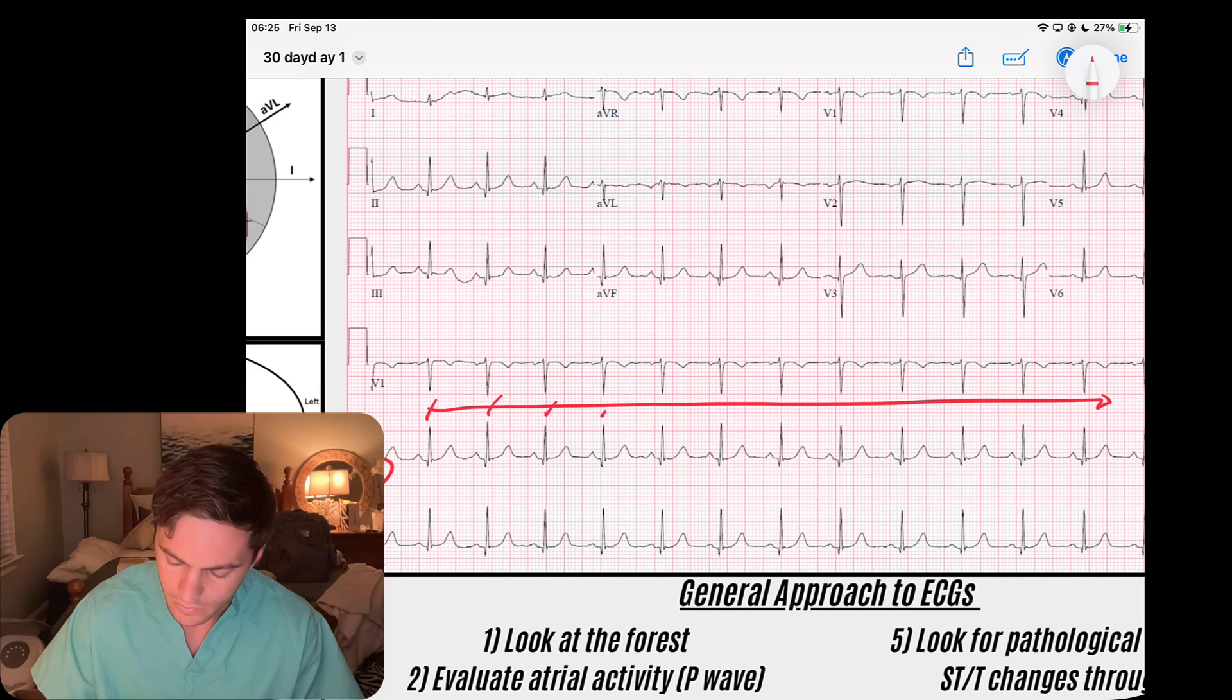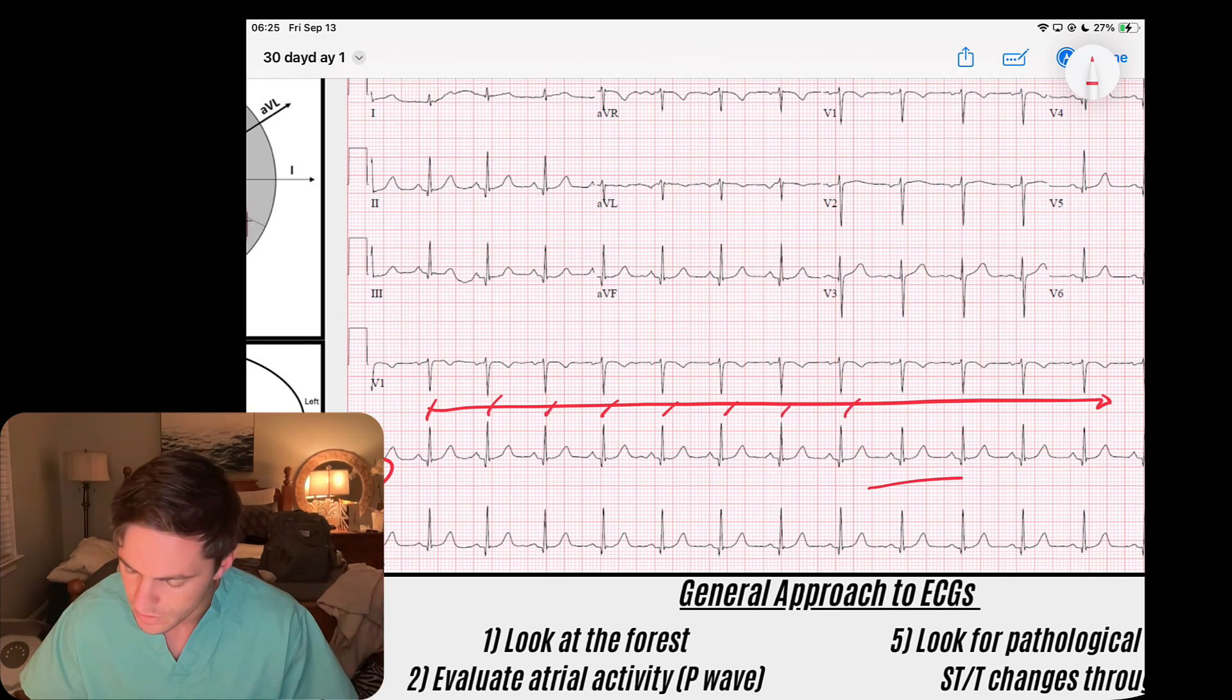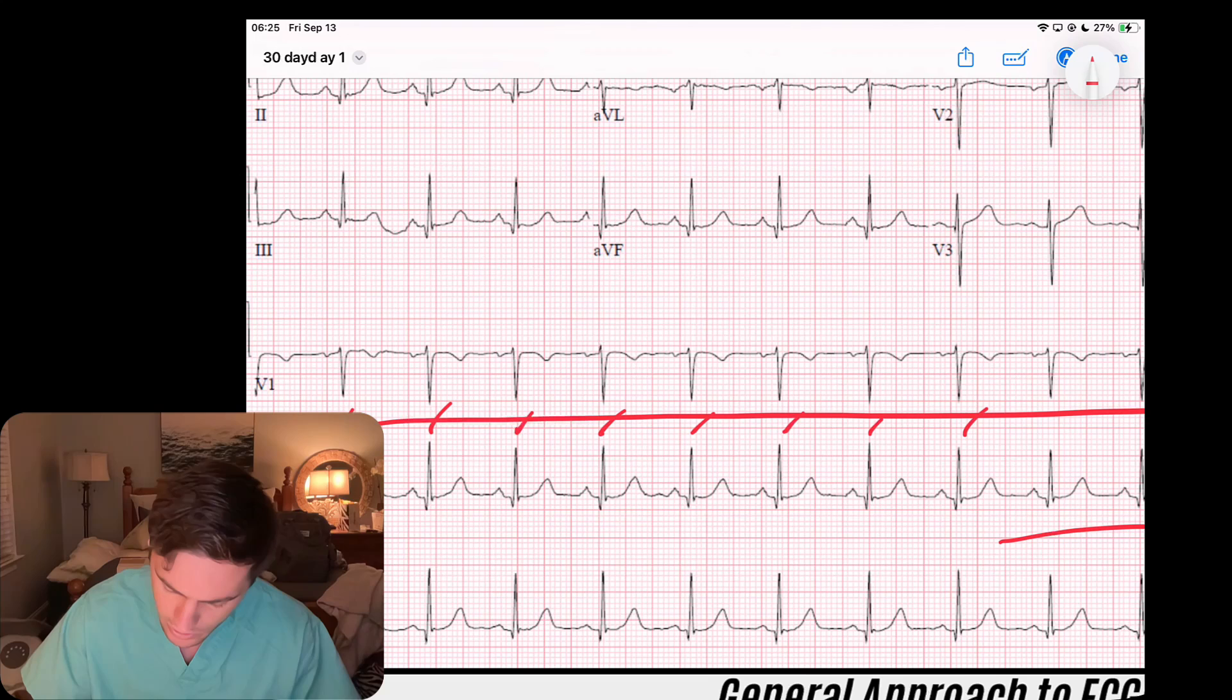Those QRS's are representing our ventricular depolarization. I've got a regular rhythm, and if I look at the rate, if I pick a QRS complex that lands maybe here on a solid line, that would be 300, 150, 100, just under 100—so we'll call this 90 beats per minute.